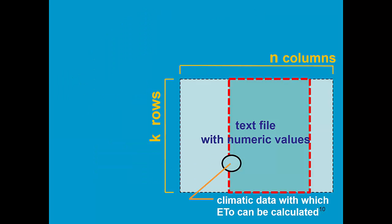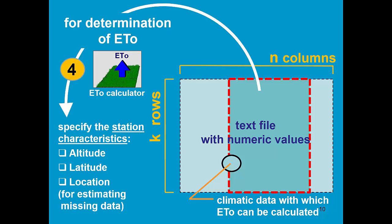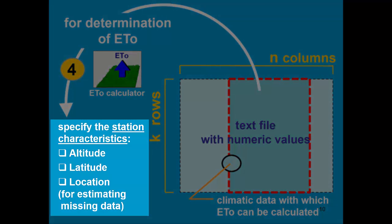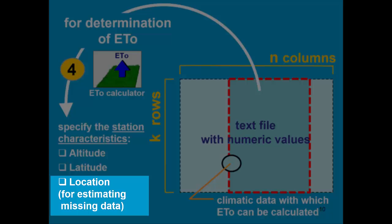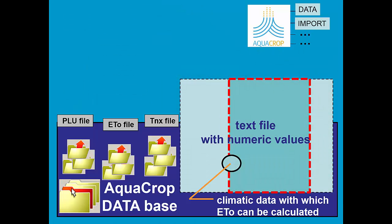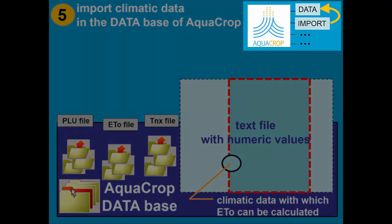The text file might contain climatic data with which ET0 can be calculated. To determine ET0, AquaCrop will require the station characteristics — the altitude, latitude, and the location — for estimating missing data. This will assign default values to the coefficients required for estimating humidity data, radiation data, and wind speed. Step 5 consists in importing climatic data in the database of AquaCrop.